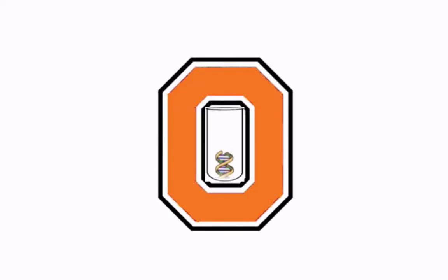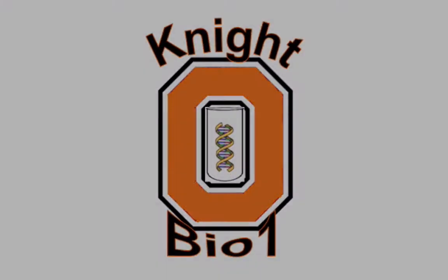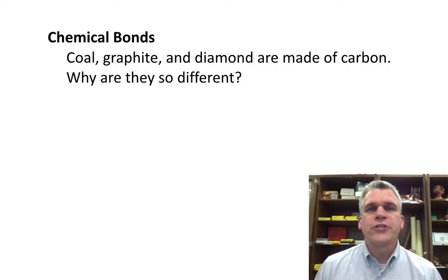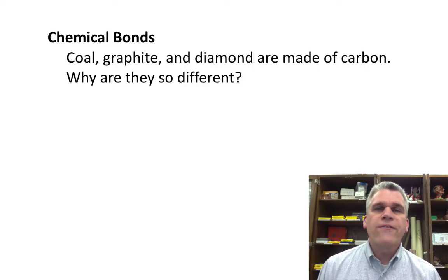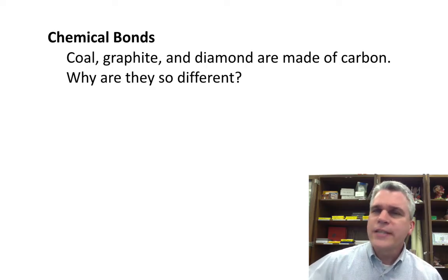Hello everyone, I'm Mr. Furlong, and today we're talking chemical bonds. Let's start out with a question. Coal, graphite, and diamond, all three of these things are made up of carbon, but they're so very different from one another. Why are they?